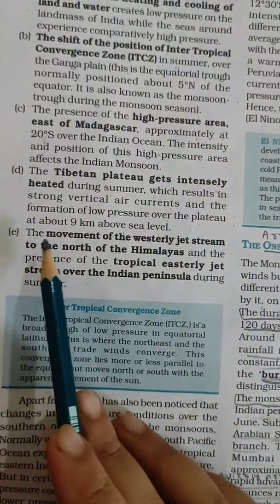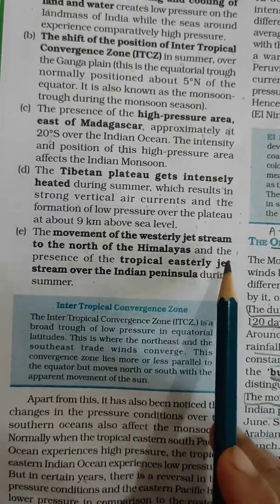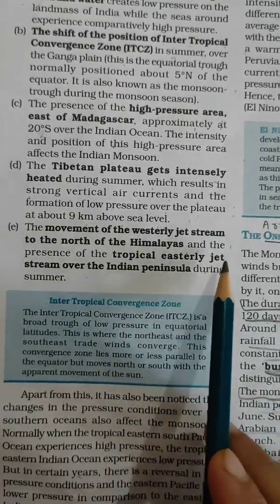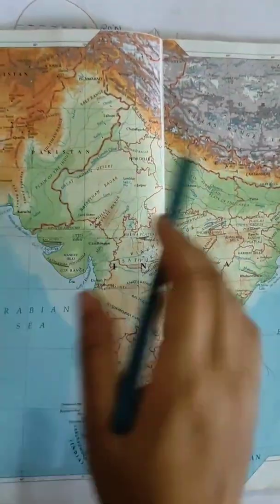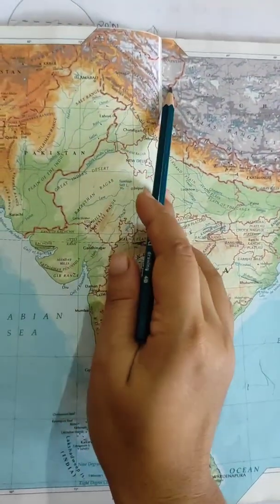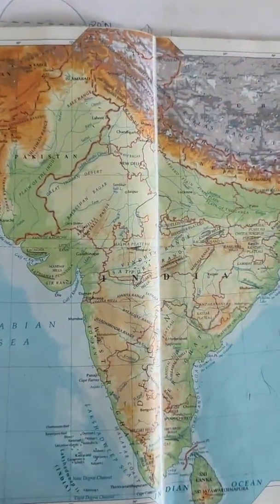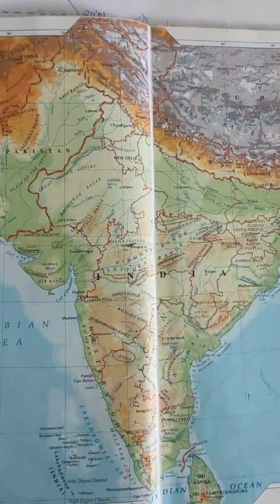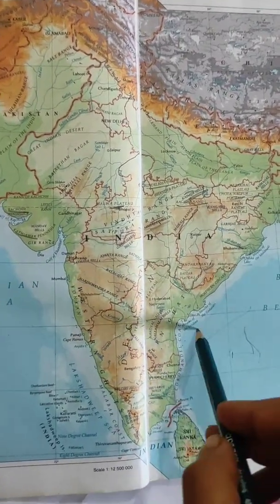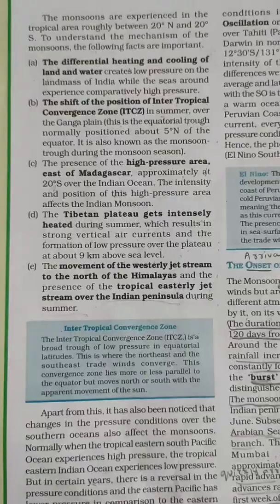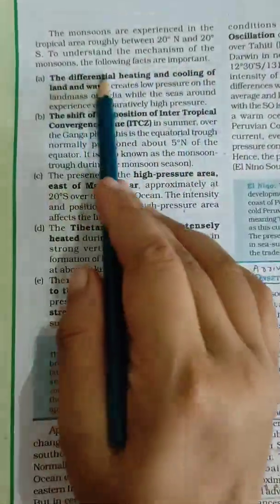Fifth is the movement of the westerly jet stream to the north of the Himalayas and the presence of the tropical easterly jet stream over the Indian Peninsula during summer. During the summer season, the westerly jet stream moves to the north of the Himalayas while the tropical easterly jet stream is present over the Indian Peninsula. These are the key facts related to the mechanism of the monsoon.